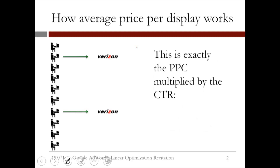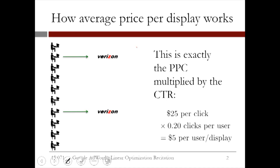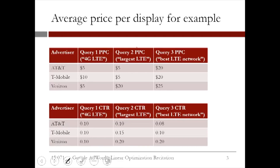We could have obtained this amount in a simpler way. In particular, as we defined in the previous slide, this turns out to be exactly the same as the price per click multiplied by the click-through rate. For our data, to obtain the average price per display, we simply need to multiply the price per click table and the click-through rate tables together.